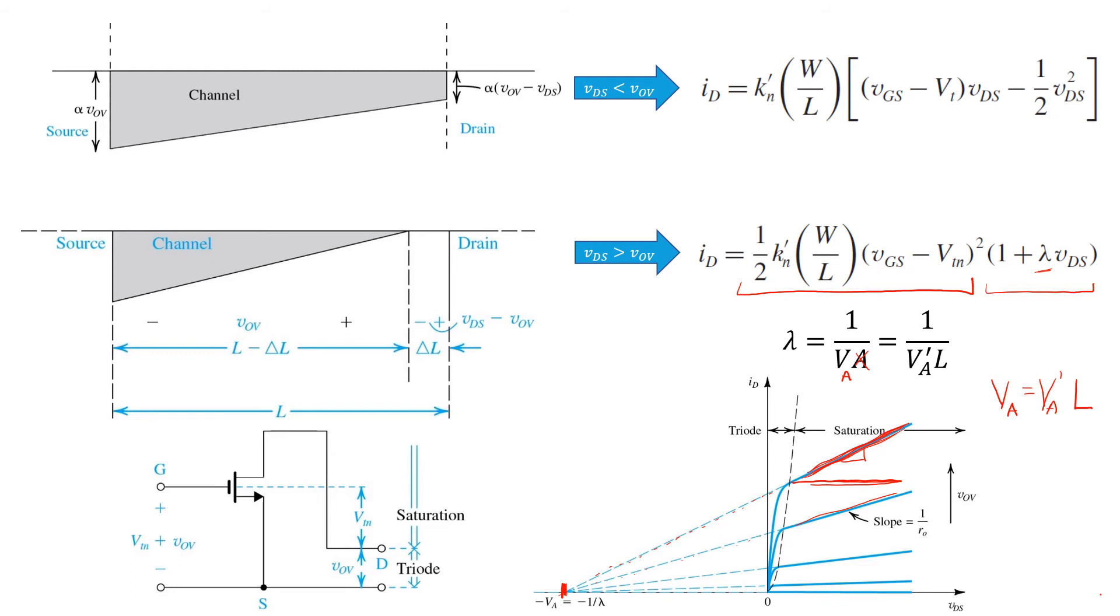Remember, these dashed lines are just extensions of the plot in saturation. They're not real. But they capture a nice intuition that can be useful to keep in mind, which is that for higher values of VGS, and hence higher values of ID, the slope of this curve in saturation increases.